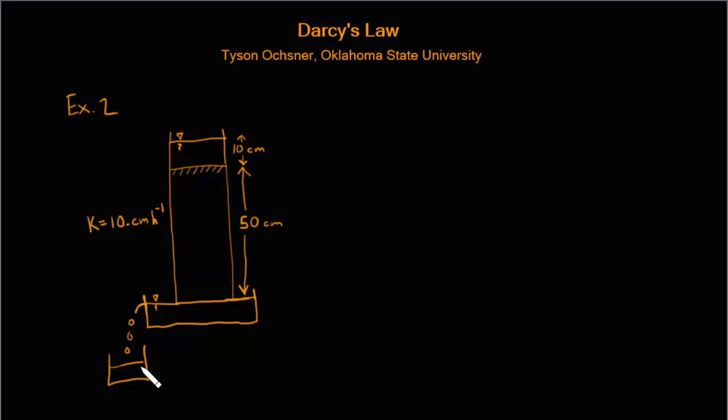We'll be using Darcy's law, and as you remember, Darcy's law says that the flux through the column Q is equal to the saturated hydraulic conductivity K times the hydraulic gradient, which we can write as change in soil water potential through the column divided by the length of the column.